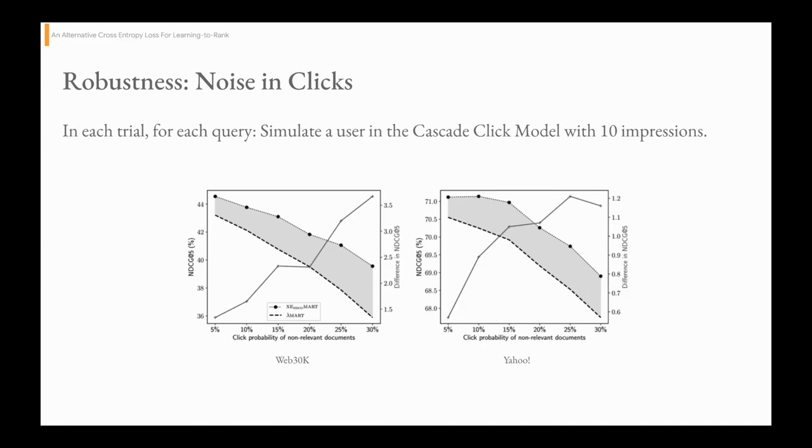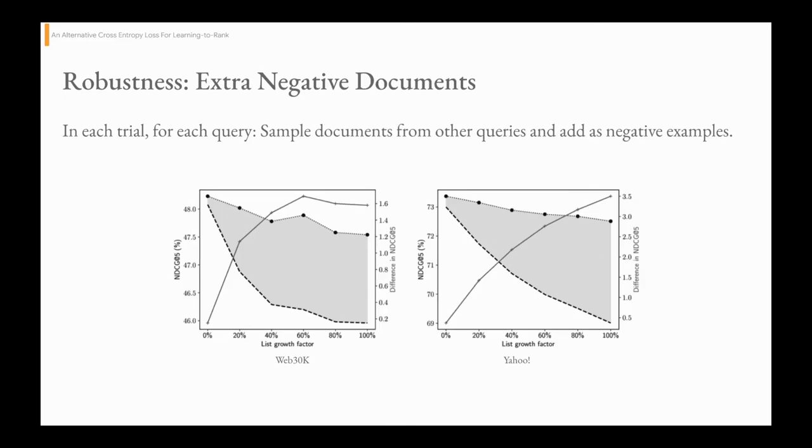In the second scenario, we simulate a user and their interaction with ranked lists using the cascade click model. In this model, if the click probability of the non-relevant document is X percent, that means the user will click a non-relevant document X percent of the time. We can observe again that the gap between cross-entropy and LambdaMART increases as we add more noise to the dataset, and this trend generally holds up across both datasets.